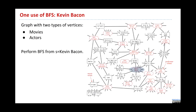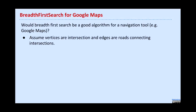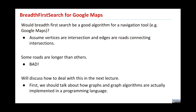As we'll see in a later lecture, problems you want to solve in the real world are really just basic graph problems in disguise. Would breadth-first search be a good algorithm for Google Maps, where each vertex is an intersection and each edge is a road? The answer is no—not all roads and intersections are the same distance apart. Some roads are longer than others between two points. We'll talk about how to deal with that on Friday.